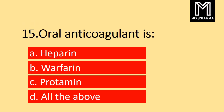Question number 15. Oral anticoagulant is: Option A heparin, B warfarin, C protamine, D all the above. Correct answer: Option B warfarin.